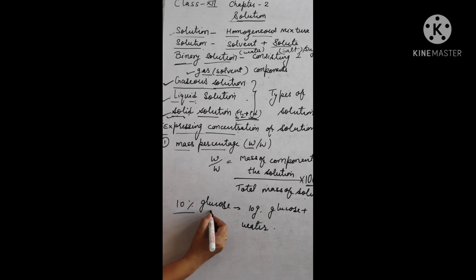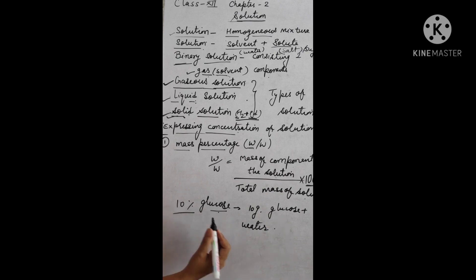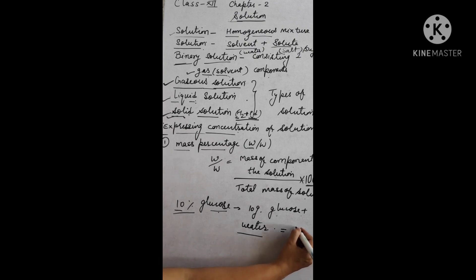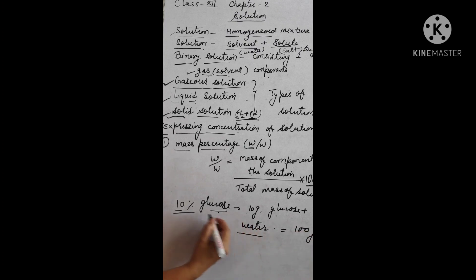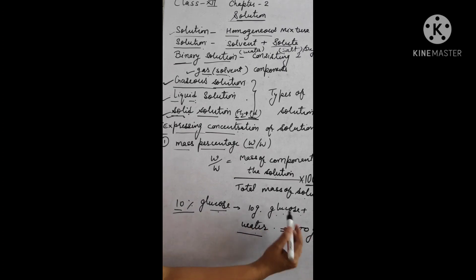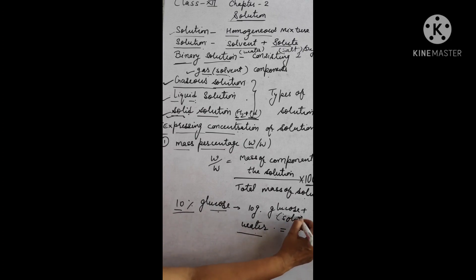For example, 10 percent glucose means 10 grams of glucose is dissolved in 90 grams of water, making a total of 100 grams. So in 100 grams of solution, 90 grams is water and 10 grams is glucose. Glucose acts as the solute and water acts as the solvent here.